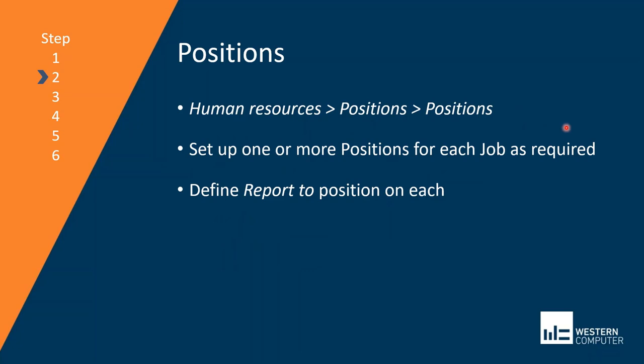The next step is to go into the positions setup in HR. You will set up one or more positions for each job as required. For example, you may have positions for five purchasing agents, all related to a single job record. Finally, you will define the report-to position on each of those positions, so you'll need to construct this from the top down in order to record the report-tos.